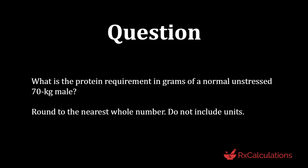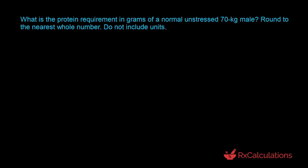So let's get right to it. This question says: what is the protein requirement in grams of a normal unstressed 70 kilogram male? Round to the nearest whole number, do not include units. The goal is to determine the amount of protein this 70 kilogram male would need. It's important to pay close attention to the phrase 'normal unstressed' because this tells us the condition of the patient and guides us as to how much protein the patient needs daily.